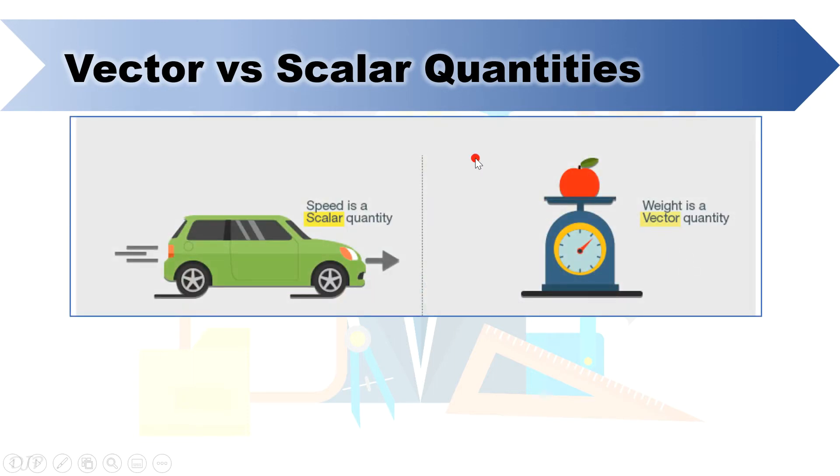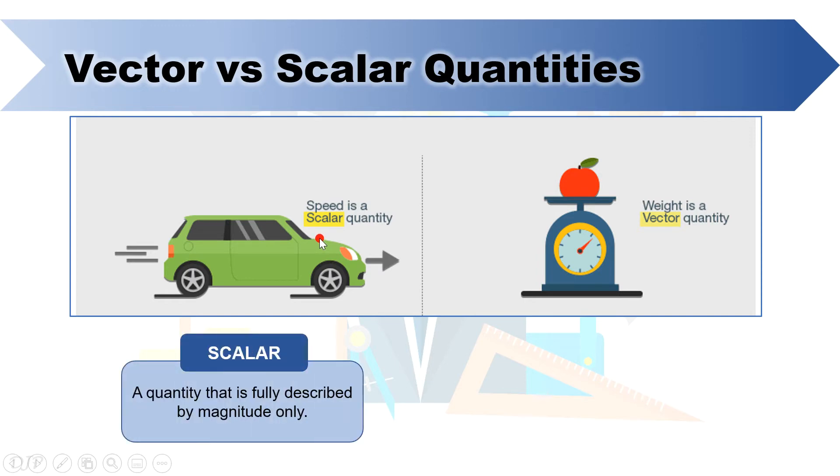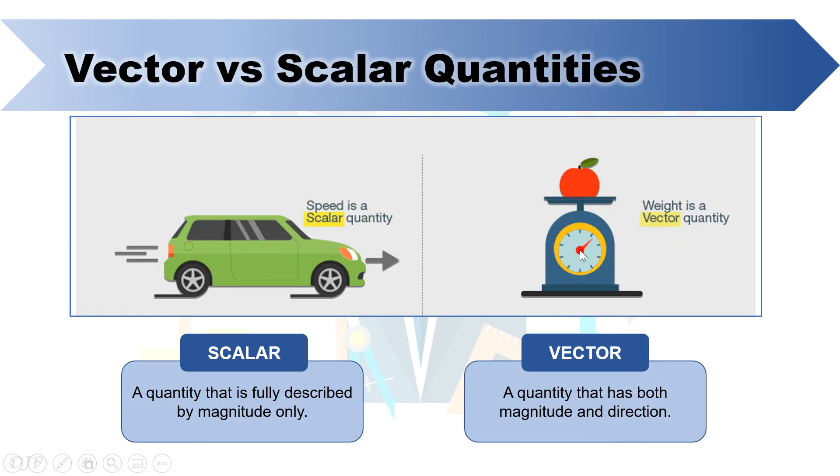As you can see in the right side, speed is a scalar quantity, since scalar quantity is described only by magnitude, while the weight of the apple is a vector quantity, since it has magnitude, which is indicated by the scale, and direction, which is downward, for all gravitational forces on Earth.